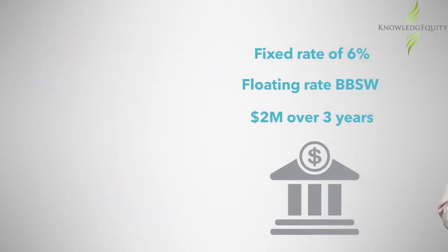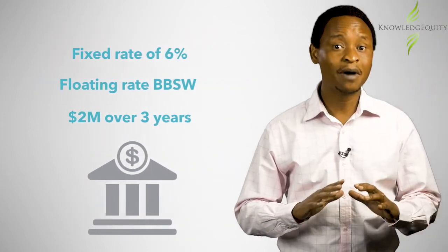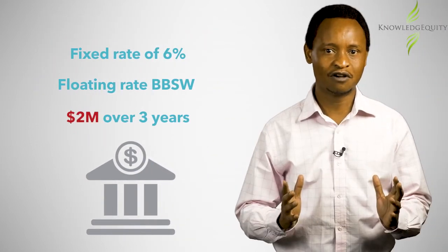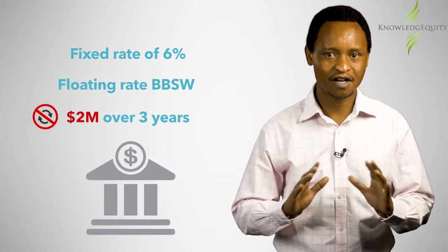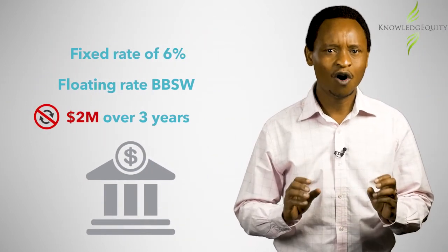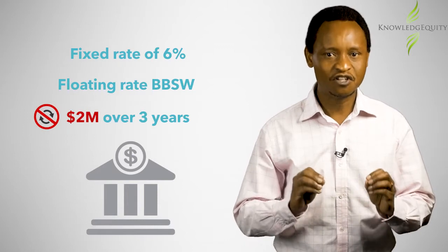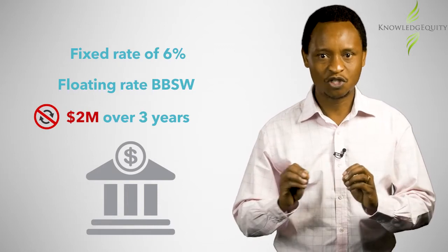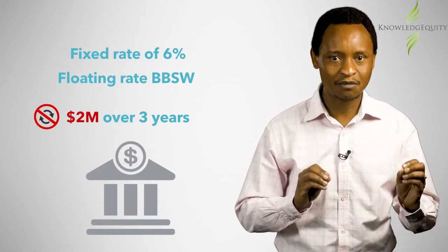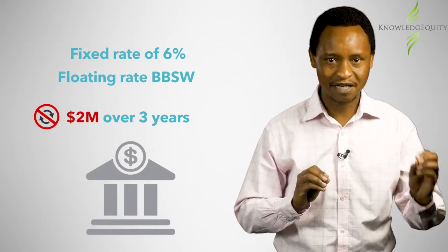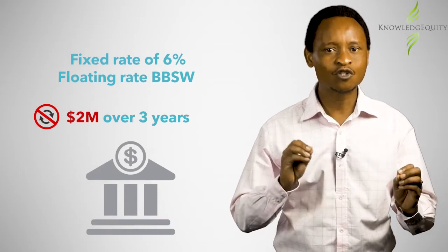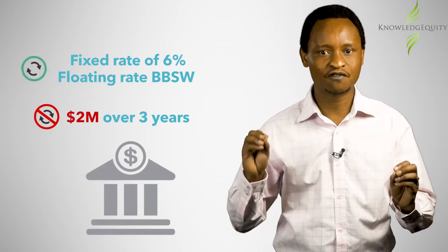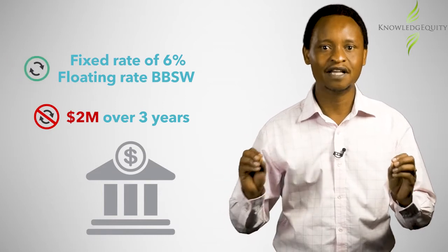In the IRS, the principal amount of two million dollars is never swapped. Only the net interest differential between the BBSW at each settlement date and the swap fixed rate of six percent is swapped.